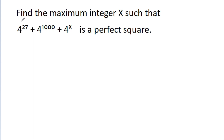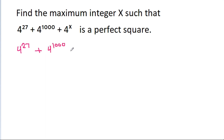In this video, we have to find the maximum integer x such that 4 power 27 plus 4 power 1000 plus 4 power x is a perfect square. So we have 4^27 + 4^1000 + 4^x equal to m squared.